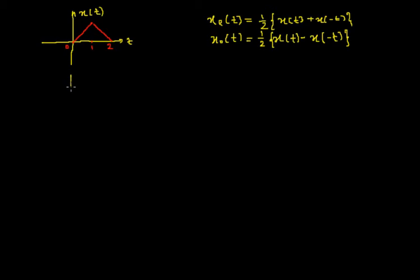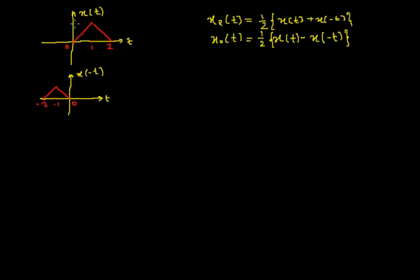The first task is to draw the signal X(-t), which is the mirror image of X(t). The mirror image looks something like this, with time periods at 0, minus 1, and minus 2. The amplitude of X(t) is 1 and here also it remains as 1.